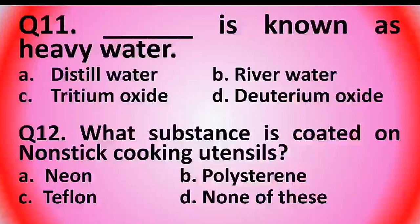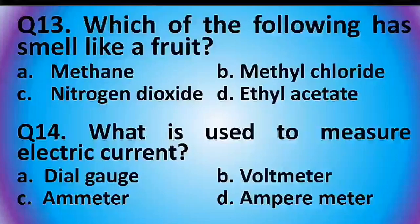Question 12: What substance is coated on nonstick cooking utensils? Options are: neon, polystyrene, Teflon, or none of these. The answer is option C: Teflon.